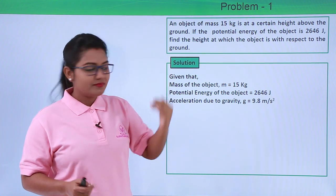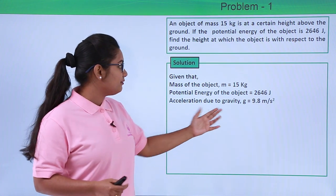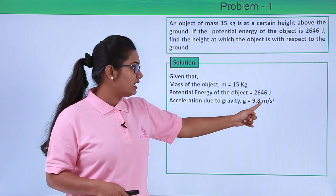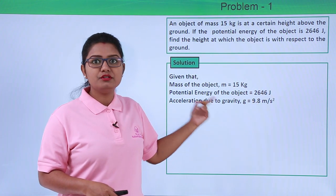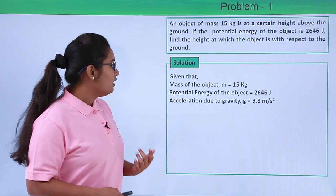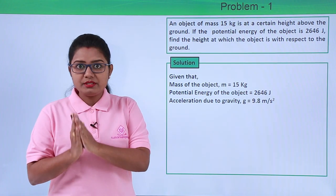The acceleration due to gravity, we know its value to be 9.8 meters per second squared, which we are going to use in this problem. Now we know the expression for the potential energy of a body which is raised to a certain height above the ground.